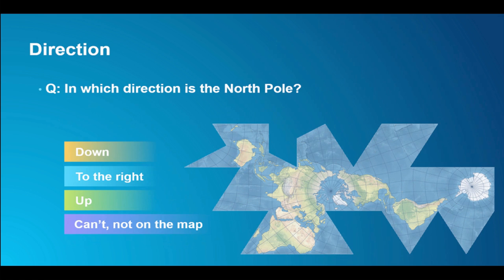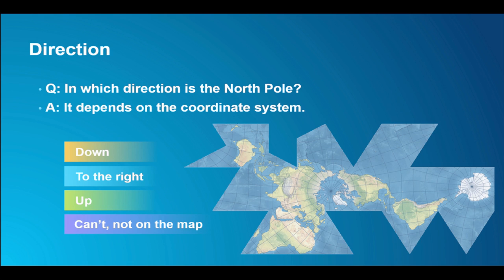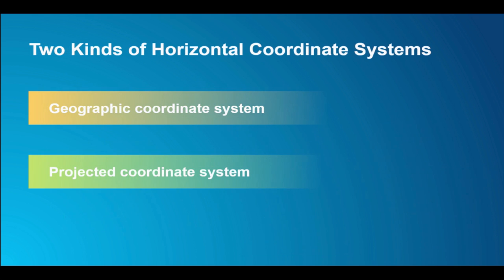Similarly, where is the North Pole? Is it on the right, on the top, on the bottom, or not even on the map at all? Again, it all depends on what your coordinate system is. There are two kinds of horizontal coordinate systems: geographic and projected.